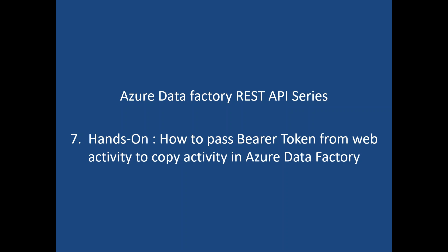Generally, whenever we are copying data from a REST API to a Data Lake or to our SQL database, the common requirement is we need to get the latest token and pass it to the copy activity. The token is only active for five to ten minutes, so whenever you are copying data you need to get the latest token and pass it into your copy activity to read the latest data from the REST API and load it into the target — which can be a SQL database, Data Lake, blob, or anything.